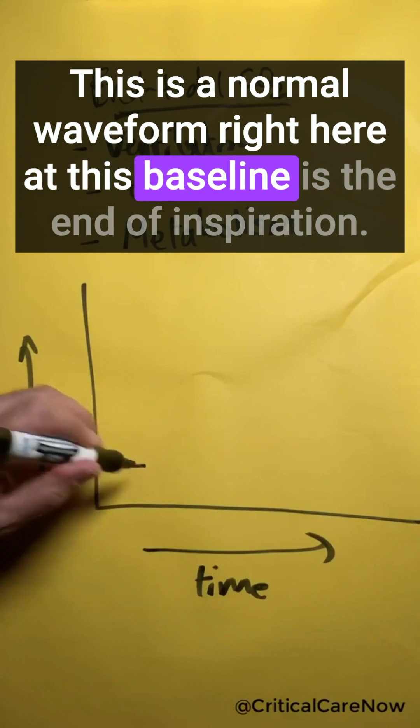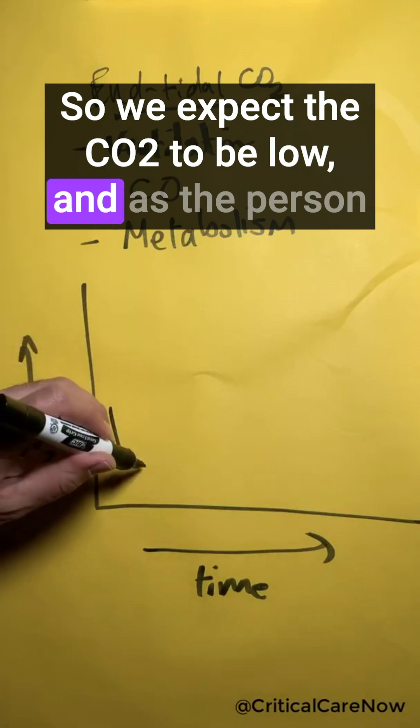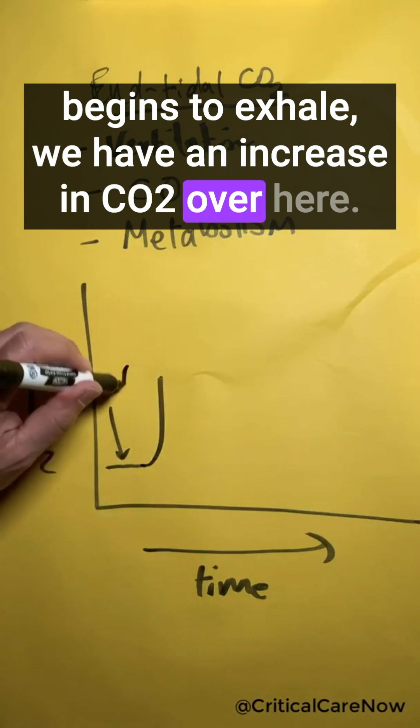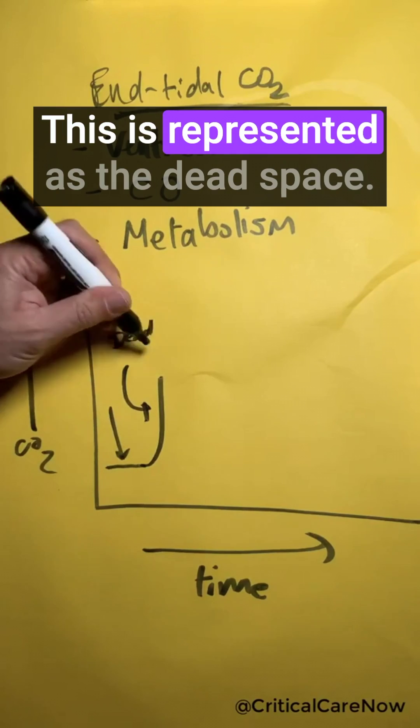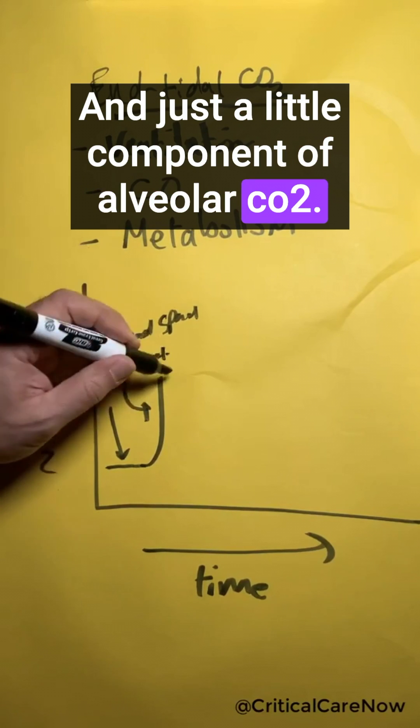Right here at this baseline is the end of inspiration, so we expect the CO2 to be low. And as the person begins to exhale, we have an increase in CO2 over here. This is represented as the dead space and just a little component of alveolar CO2.